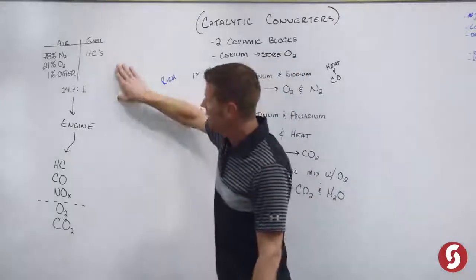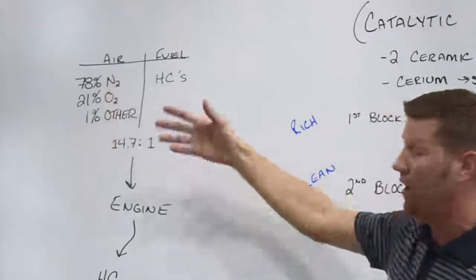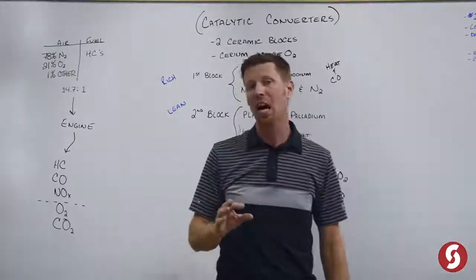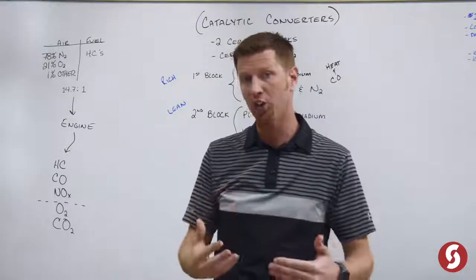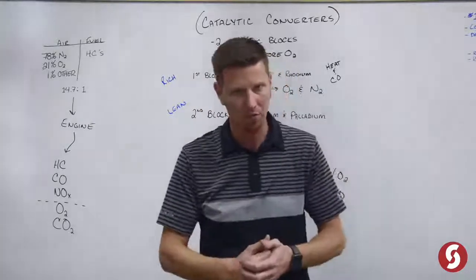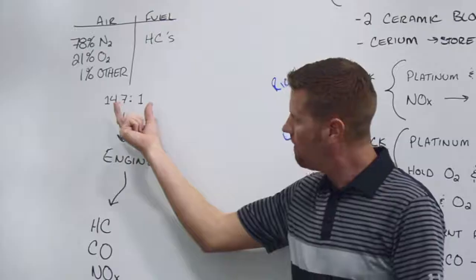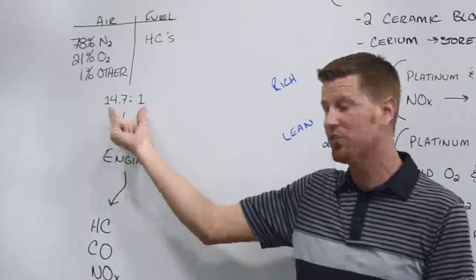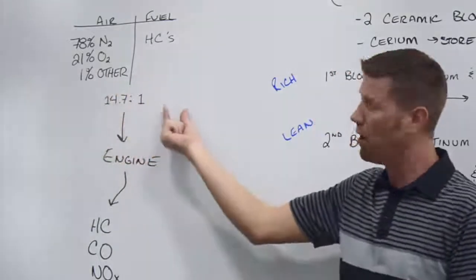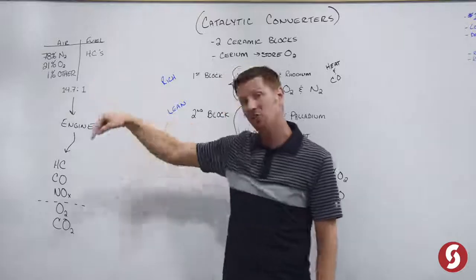as far as what goes in the engine we have air and fuel. Air, the air that we breathe is 78% nitrogen, 21% oxygen, and 1% other gases. And then of course fuel is a combination of hydrocarbons and other things. Well there's a ratio. 14.7 to 1 is the ratio. So 14.7 parts air for every one part fuel. That's going into the engine.